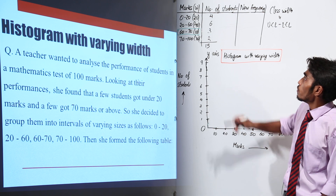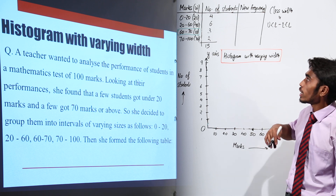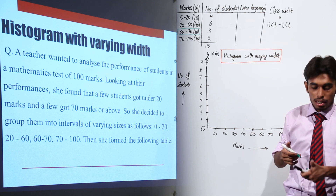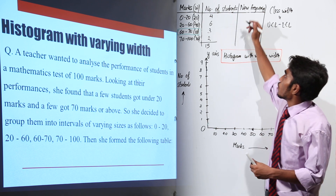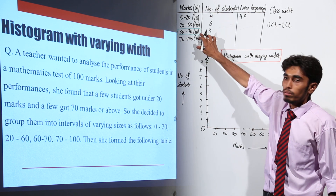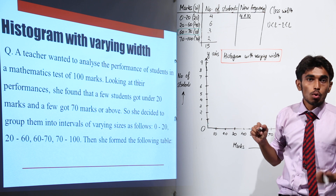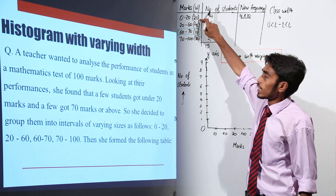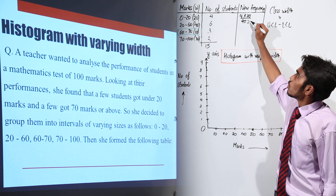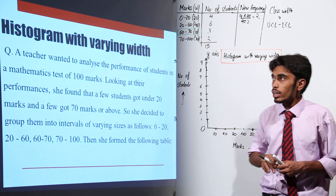Now what we need to do is multiply the frequency by the minimum class width and divide it by its corresponding class width to get the new frequency. So let us start with the first one. We have 4 multiplied by the minimum class width that is 10, and divided by its own class width, which is 20. So 4 into 10 divided by 20 comes out as 2. So the new frequency of the first class interval is 2.